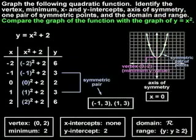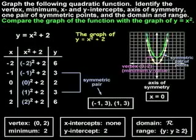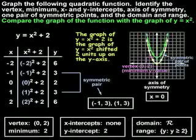Finally, we're asked to compare the graph of the function with the graph of y equals x squared. Remember that the graph of y equals x squared, or the parent graph for the family of quadratic functions, is a parabola that opens upward with a vertex at the point (0, 0). So the graph of y equals x squared plus 2 is simply the graph of y equals x squared translated, or shifted, two units up on the y-axis. In other words, the plus 2 after the x squared term shifts the graph two units up.